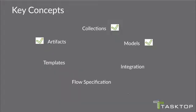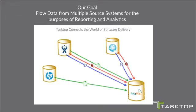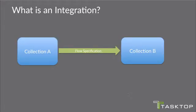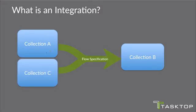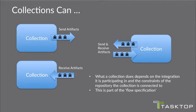Now that we've covered artifacts, collections, and models — what is an actual integration? Our goal is to flow data from multiple source systems for reporting and analytics. At the highest level, we define an integration whereby collection A flows information to collection B, and it can get more complex with multiple collections all flowing into collection B. Collections have the ability to send artifacts, receive artifacts, or both — depending on the integration and the constraints of the repository. All of this is part of the flow specification.